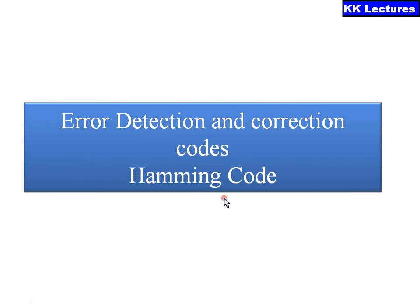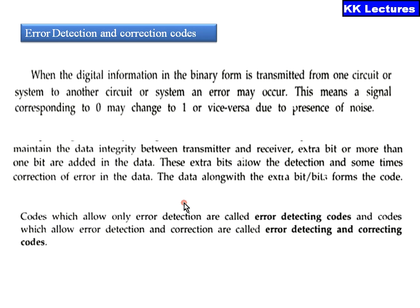In this video we will be looking at the Hamming code — how it will be correcting the error as well as how it will be detecting the error. Whenever digital information in binary form is transmitted from one circuit or system to another, an error may occur. A signal corresponding to zero may change to one or vice versa due to the presence of noise. So whenever a transmitted signal is passed through a channel there is a chance of mismatching the data. To maintain the data integrity between the transmitter and receiver, we are adding an extra bit or more than one bits to the original data. These extra bits allow the detection and sometimes correction of errors.